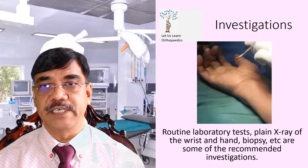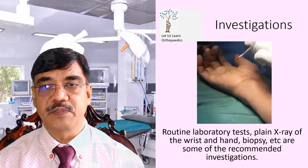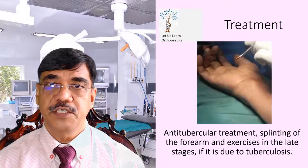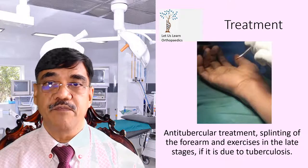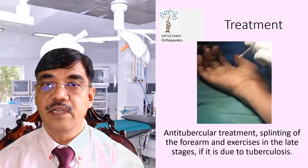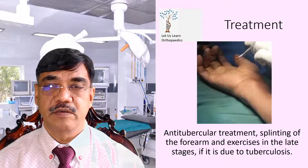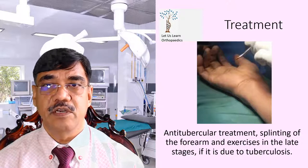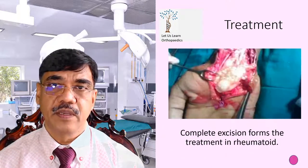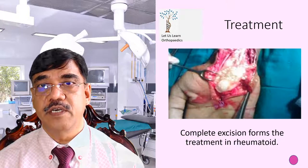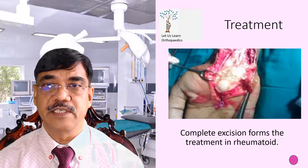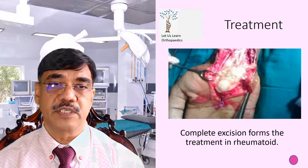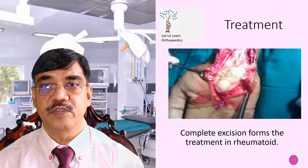Investigation-wise, routine laboratory tests, plain X-rays of the wrist and hand, biopsy, etc. are some of the recommended investigations. Treatment-wise, we have very effective anti-tubercular chemotherapy available. In cases of Compound Palmar Ganglion due to tuberculosis, anti-tubercular treatment, splinting of the forearm, and exercise in the late stage is sufficient. Whereas in cases of rheumatoid origin, one may need to do a complete excision of the inflamed synovial sheaths, and that is the treatment of choice in Compound Palmar Ganglion of rheumatoid etiology.